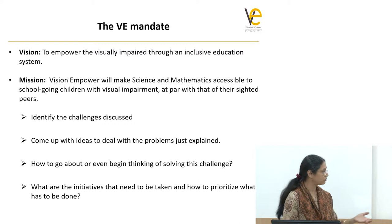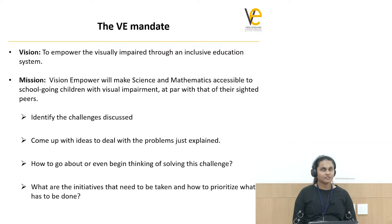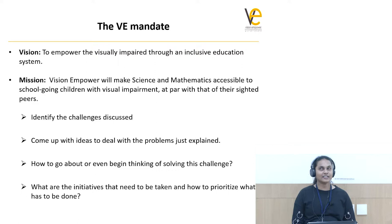The vision was to enable every visually impaired person to have an inclusive education so that they can reach their full potential. The mission was to make science and math accessible to visually impaired students, ensuring the quality of education isn't compromised — making it truly inclusive, not just physically present.